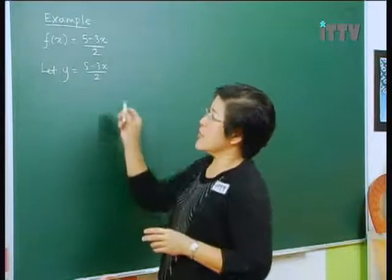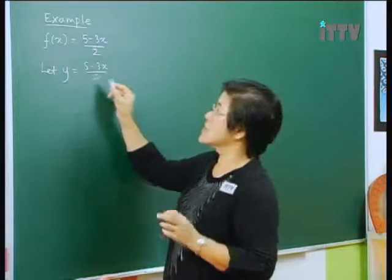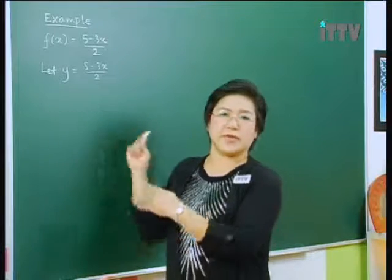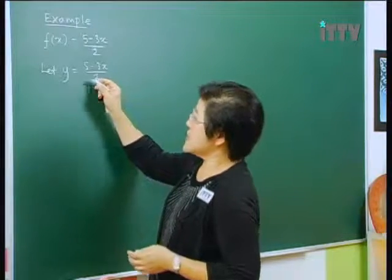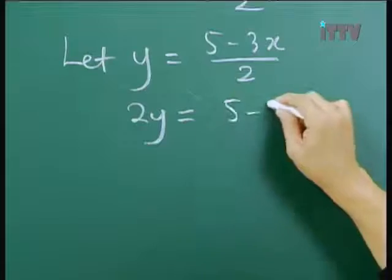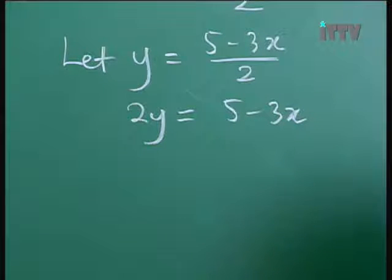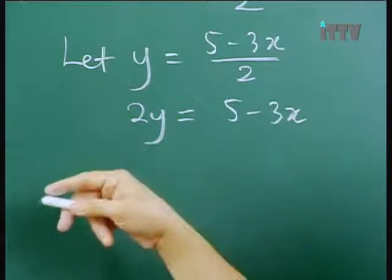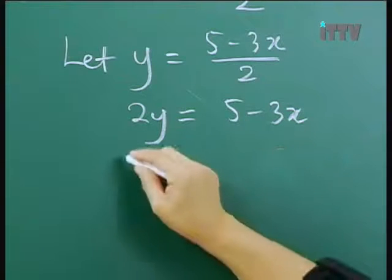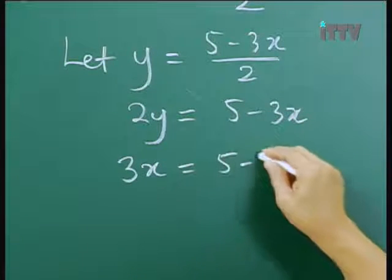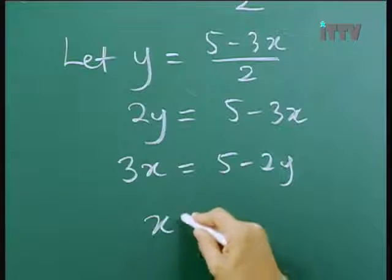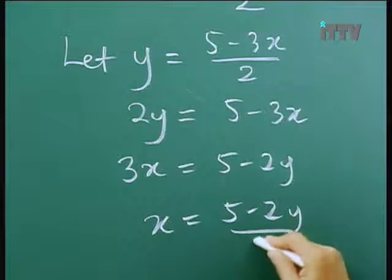Now, do you recall the next step? We want to rearrange this expression such that x becomes the subject of the formula. Step by step, we first multiply both sides by 2, thereby getting rid of the denominator. Then we transfer the term negative 3x to the left while transferring 2y over to the right, giving us 3x equals 5 minus 2y. And since this is 3 times x, x alone will be (5 minus 2y) over 3.